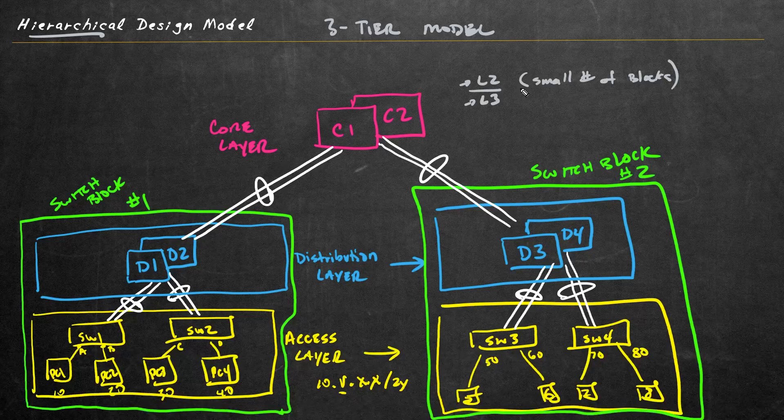As a general rule, use a layer two core for a small number of blocks and a layer three core for a large number. At the access layer, switches are layer two forwarding devices with trunking up to the distribution layer. At the distribution layer, multilayer switches provide routing between VLANs and can peer with the core. The primary purpose of the core is high-speed connectivity.